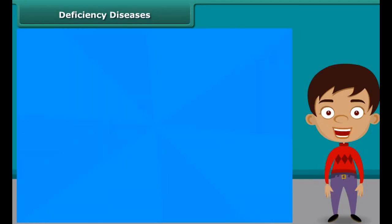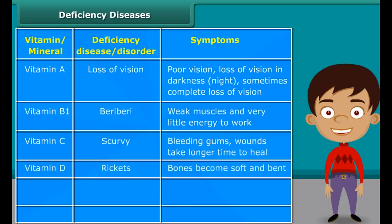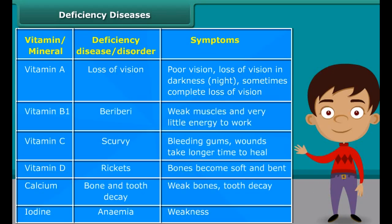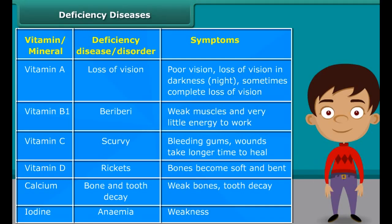After knowing about the balanced diet, we should also know that if we don't take proper diet, what will be the problems. Deficiency diseases are the diseases that occur due to lack of nutrients over a long period. Here is a list of some of the deficiency diseases and their symptoms.